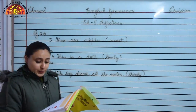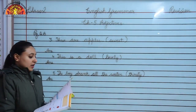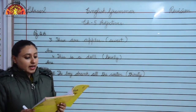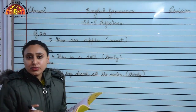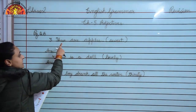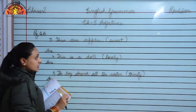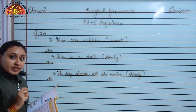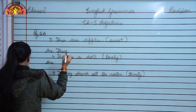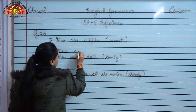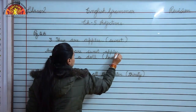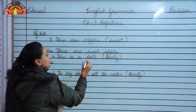Now we will revise question B on page number 21. Rewrite the following sentences using the adjectives given in brackets at suitable places. Number 3: these are apples. The adjective given is sweet. We will rewrite it as: these are sweet apples. The describing word for apple is sweet.